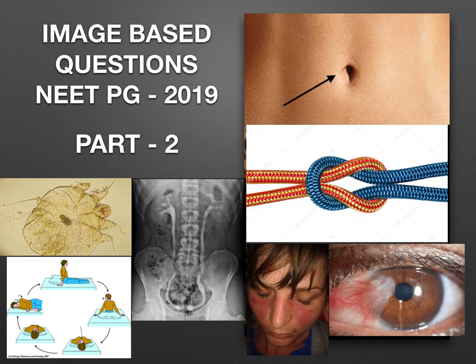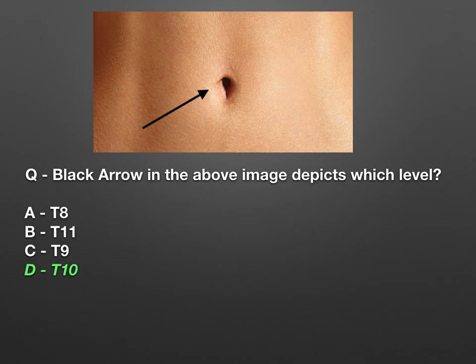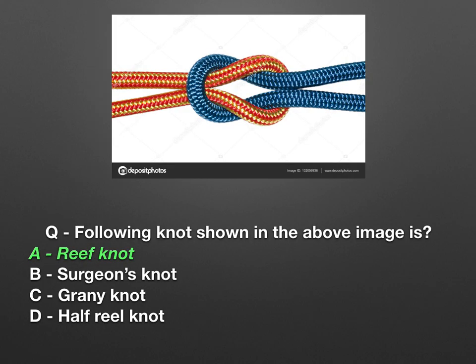Hello doctors, I am again back with some more image-based questions in NEET PG 2019. Let's start with part two. The first one: the black arrow in this image depicts which level of dermatome? The options are T8, T11, T9, T10. The answer is T10.